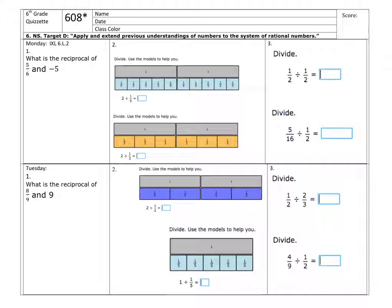Good morning or good afternoon. Today we'll be watching a Quizzette video on Quizzette 608 with the asterisk on top. As always, make sure you write your last name, comma, first name, today's date, and your class color.